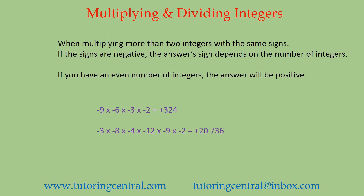If all the signs are negative and you have an even number of integers, the answer will be positive. You can just multiply the numbers and when you get your answer you know it will be a positive result. So negative 9 times negative 6 times negative 3 times negative 2 gives you 324, and you know it's positive 324 because there are 4 integers — an even number. Negative 3 times negative 8 times negative 4 times negative 12 times negative 9 times negative 2 equals 20,736 — a positive answer because there are 6 integers, and 6 is an even number.